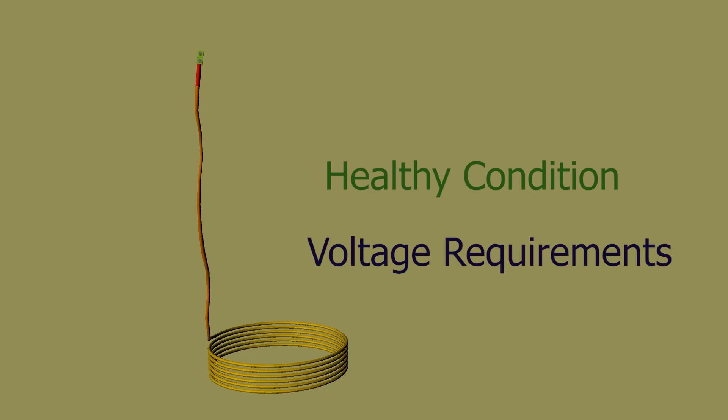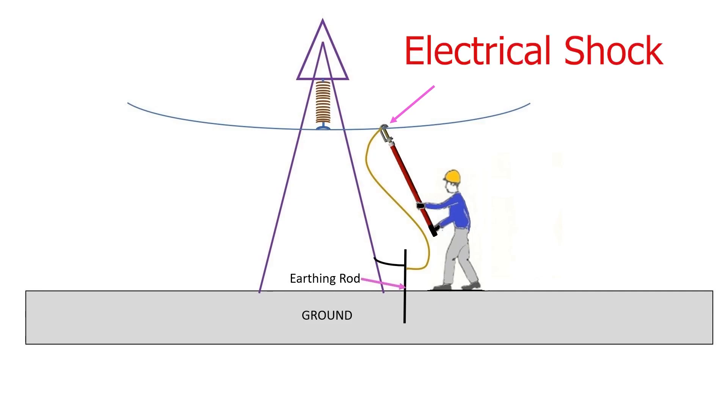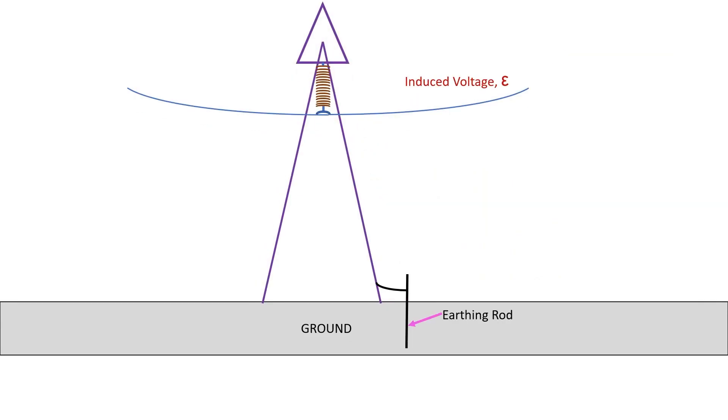When applying PTG, always connect cable with the ground first and then to the line. This is done to avoid any risk of electrical shock, because if there are induced voltages in the line and the worker connects the grounding cable with the line first, the worker can be subjected to electric shock.